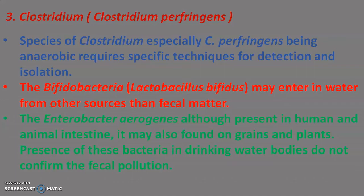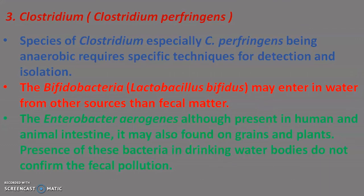The third type of indicator microorganism is Clostridium perfringens, which is anaerobic and requires specific techniques for detection and isolation. Bifidobacteria (Lactobacillus bifidus) can enter water from sources other than fecal matter. Enterobacter aerogenes, although present in the human and animal intestine, is also found on grains and plants, so its presence in drinking water does not confirm fecal pollution. In this way, we have completed the topic of indicators of water pollution and the different types of indicator microorganisms including coliform bacteria.